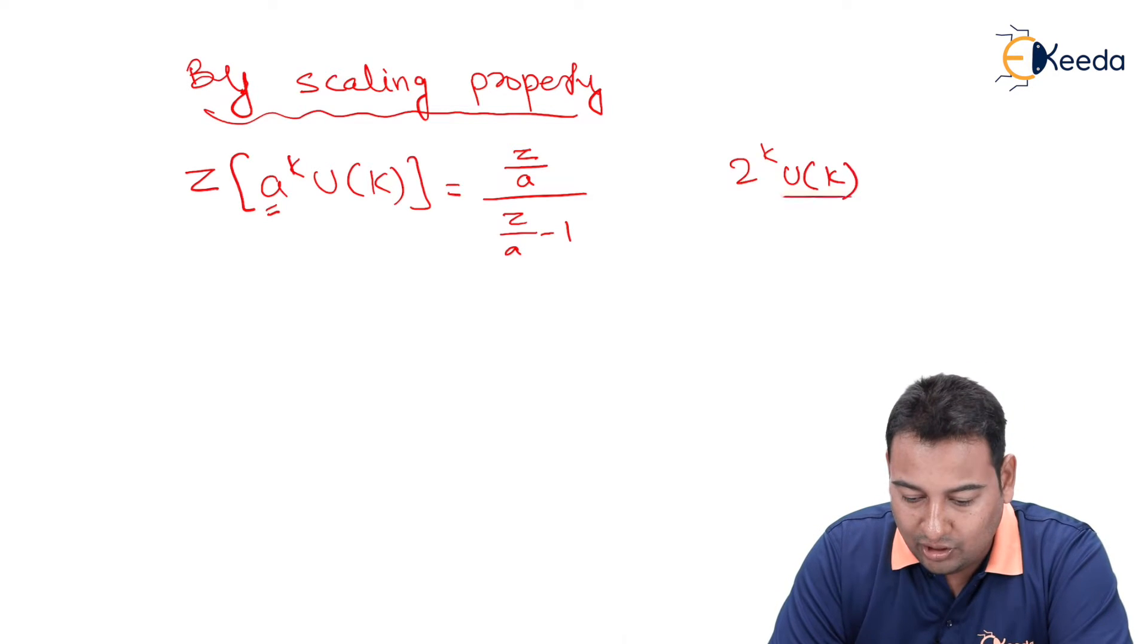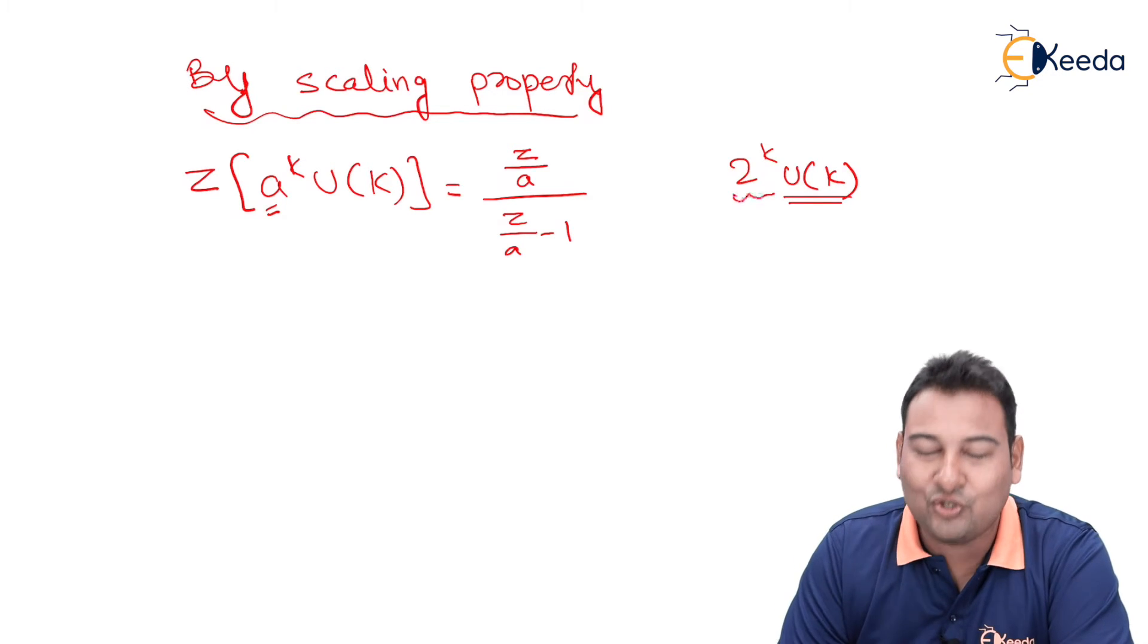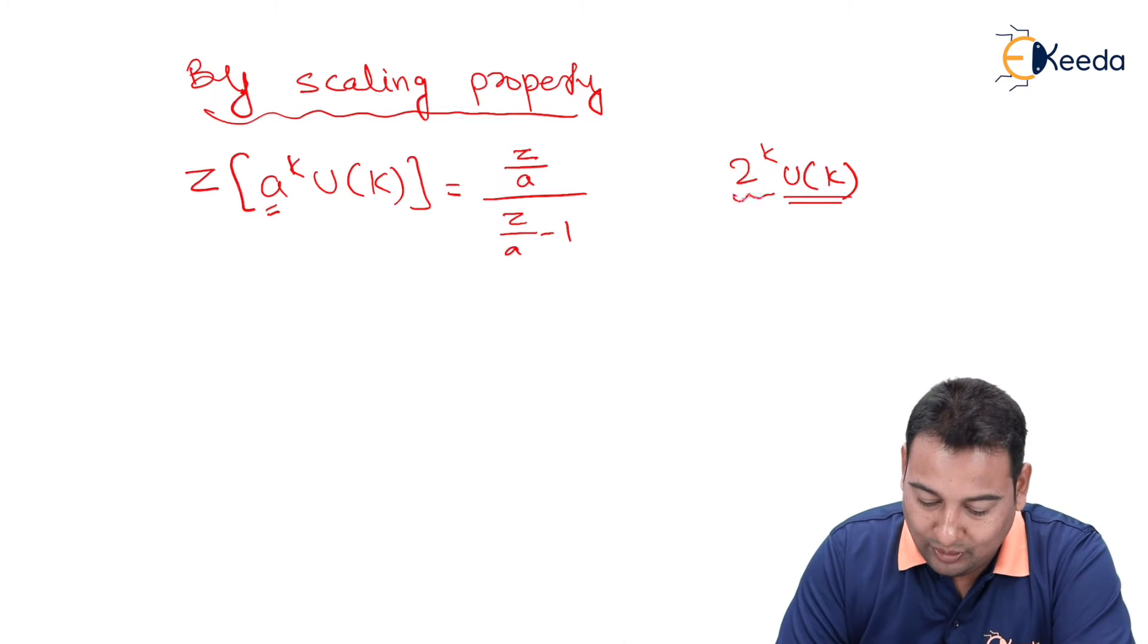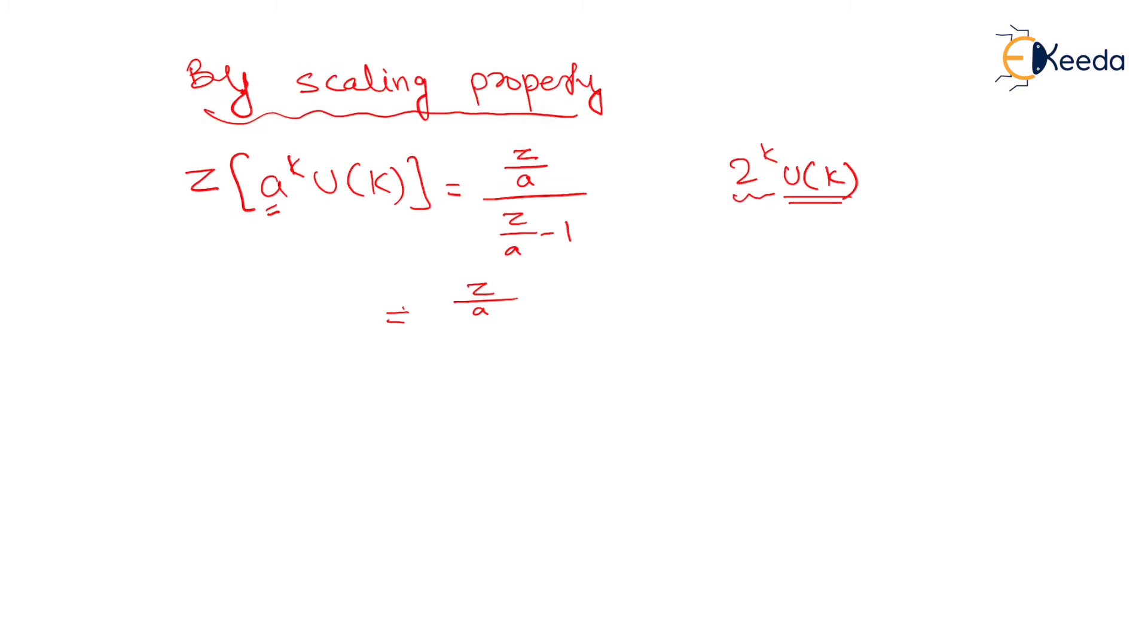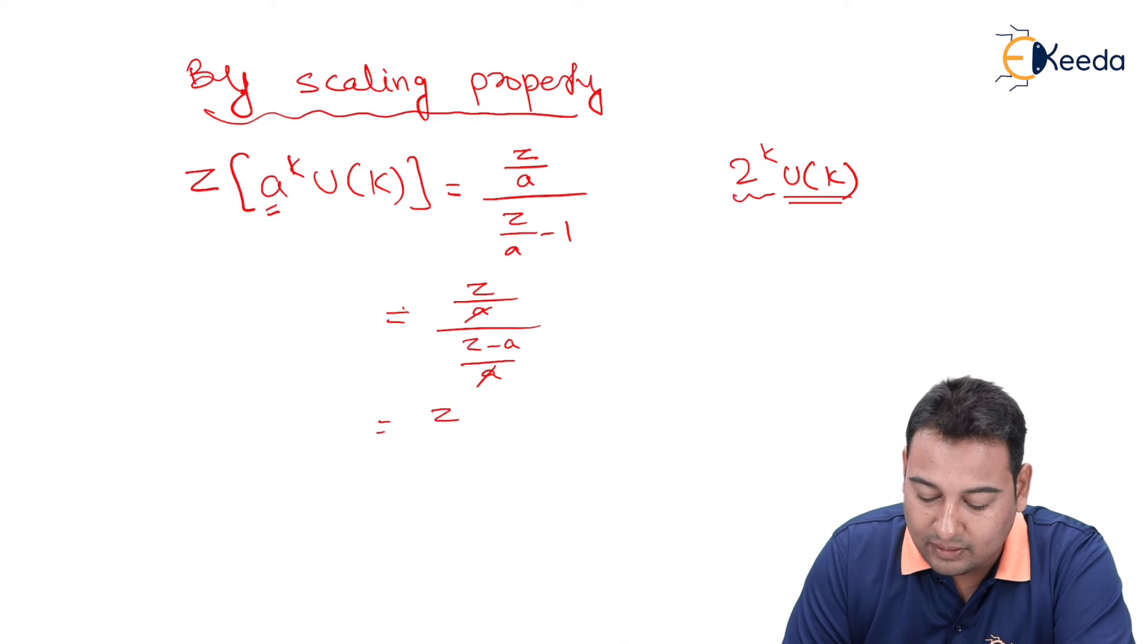So let's simplify it further. Let's take LCM here: a and z minus a. So this a, this a gone, and you are left with z upon z minus a. So this is the z-transform of a raise to k into u(k). What is the last step left? Very important, don't forget to write ROC.